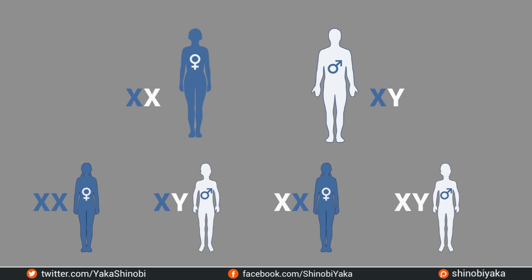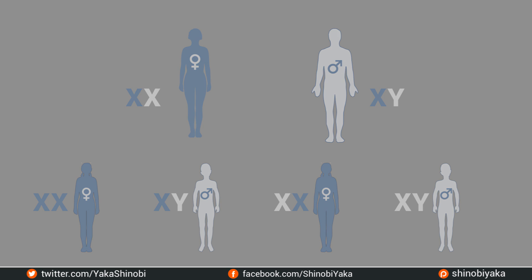Females then have two different types of cell: those with an X chromosome inherited from the mother and those with an X chromosome from the father. As the foetus grows, these cell clusters generate a genetic mosaic. This is specific to the female — there is no equivalent in males.